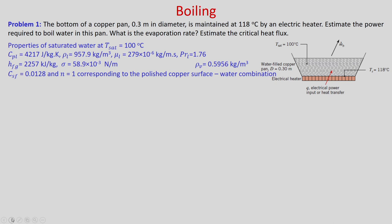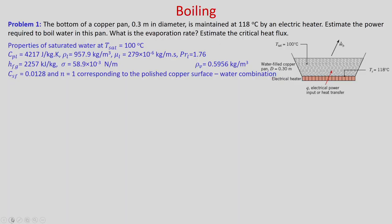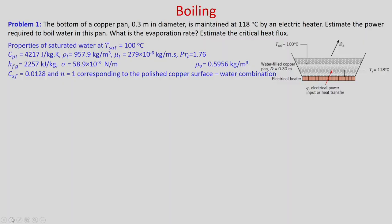Let us take the first problem. The bottom of a copper pan, 0.3 meter in diameter, is maintained at 118 degree centigrade by an electric heater. Estimate the power required to boil water in this pan, what is the evaporation rate, and estimate the critical heat flux. This is a boiling phenomenon and we need to find the evaporation rate, the critical heat flux, and the power required.